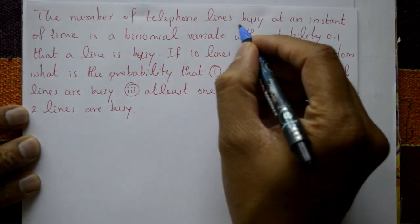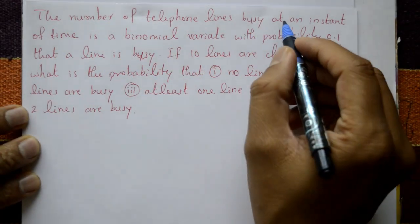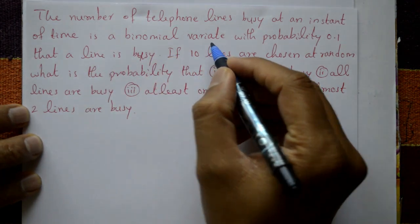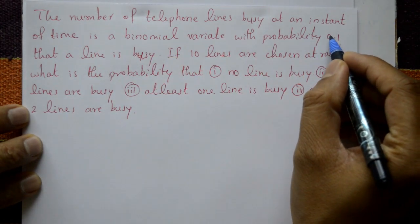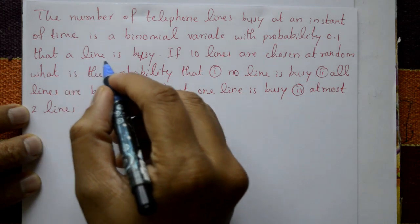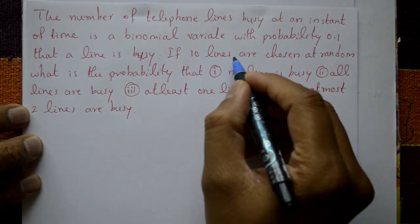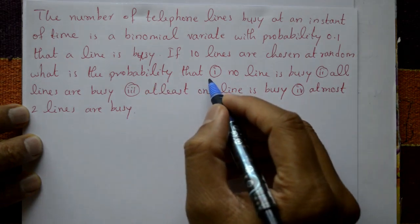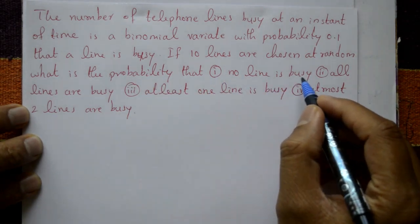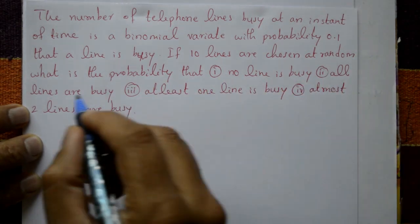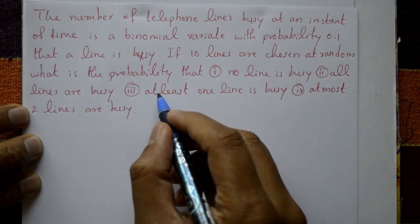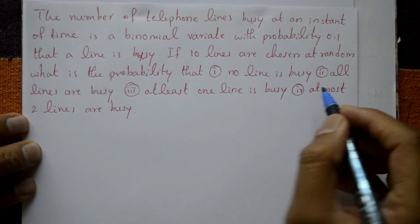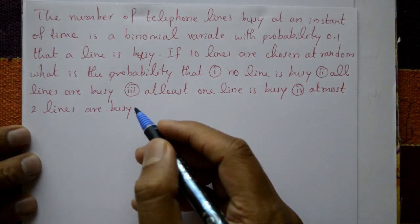The number of telephone lines busy at an instant of time is a binomial variate with probability 0.1 that a line is busy. If 10 lines are chosen at random, find the probability for: case 1 — no line is busy; case 2 — all lines are busy; case 3 — at least one line is busy; case 4 — at most two lines are busy.